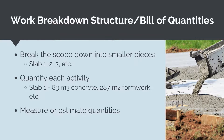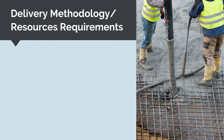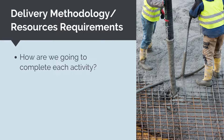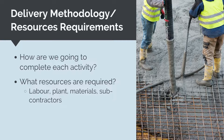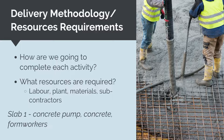It is critical to get these quantities right because these quantities will ultimately be driving our cost. For each activity in our WBS, we then need to understand what resources we need. We need to understand the delivery methodology and exactly how we are going to do the work and what is required to do it. The resources needed for each activity will be a combination of labor, plant, materials and subcontractors. For example, for slab 1, we would need concrete, a concrete pump, concreters, formworkers and so on.